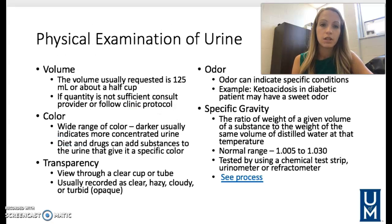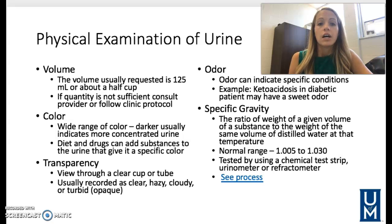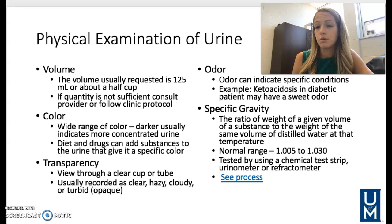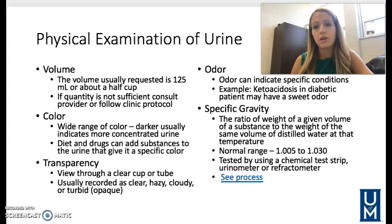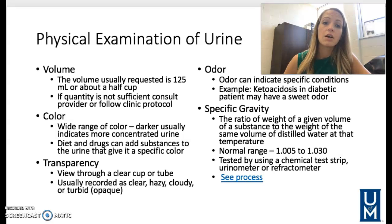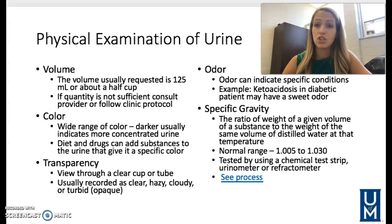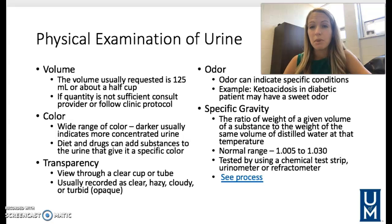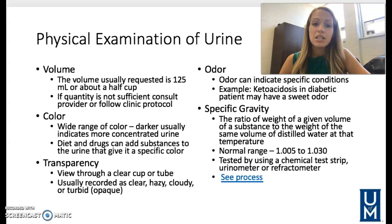When doing a physical exam of urine, we look at volume — it's usually requested that you have at least 12.5 mLs or about half a cup for the majority of testing. If the quantity is not sufficient, talk to the doctor or follow clinical protocol. Look at the color — there's a wide range; darker color indicates more concentrated urine. Diet and drugs can change urine color; some drugs can make it orange, blue, or green.